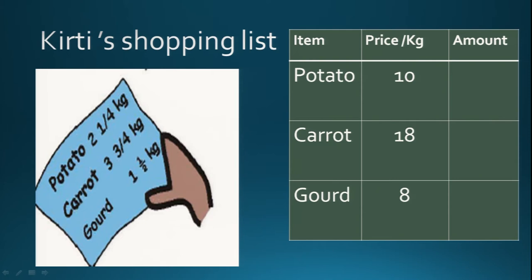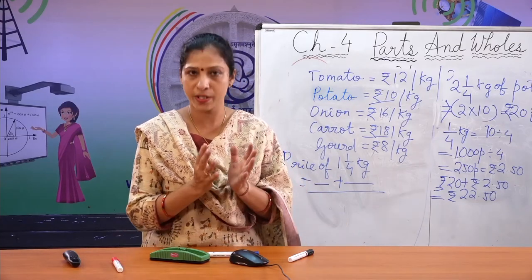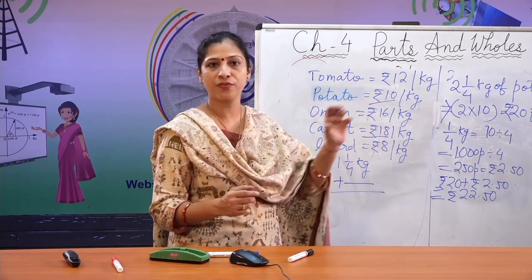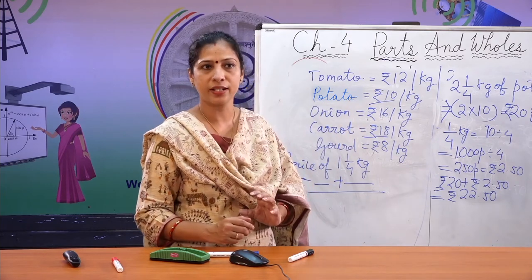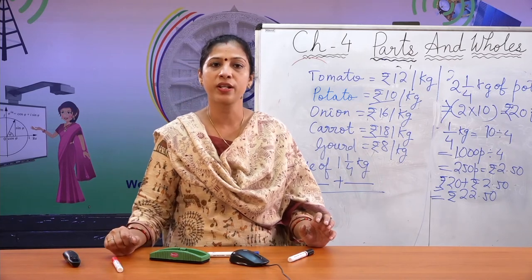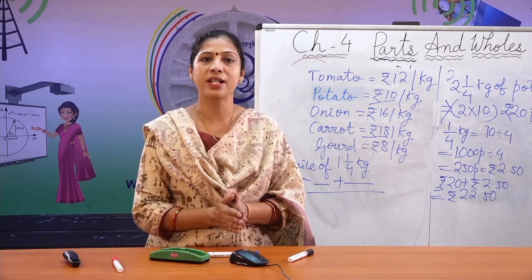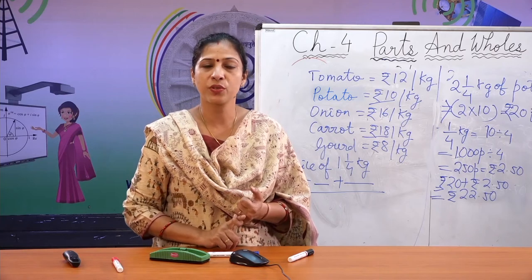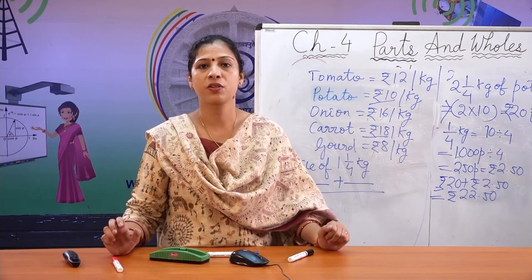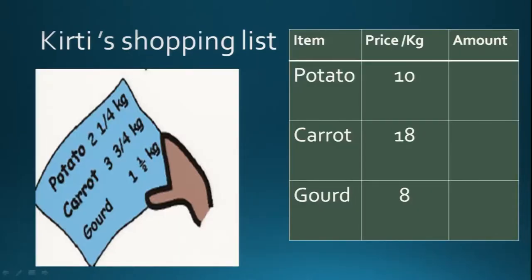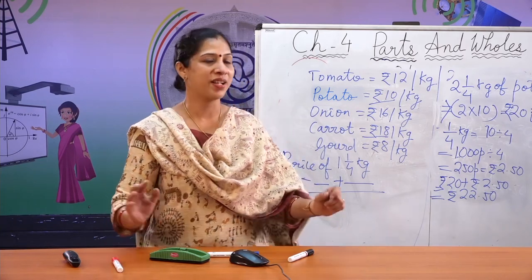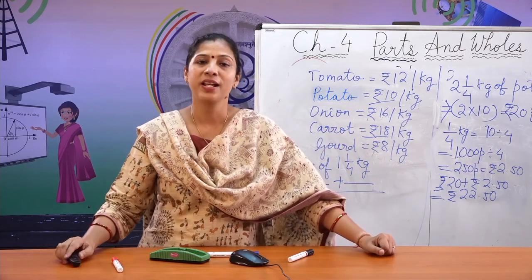After finding the price of each item, add all the amounts to get Kirti's grand total — the money she will pay to Chinnamma. You can find out the value of carrot and gourd the same way. After so many calculations, of course you can do it on your own! Now let's go to the next question.